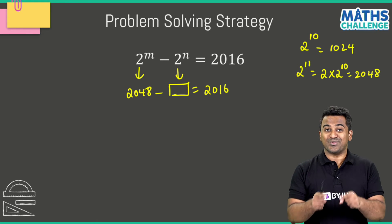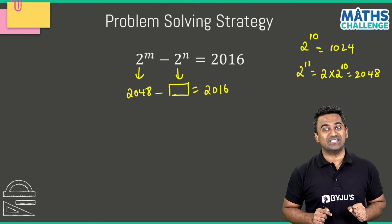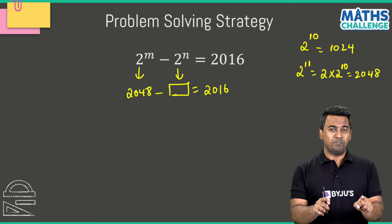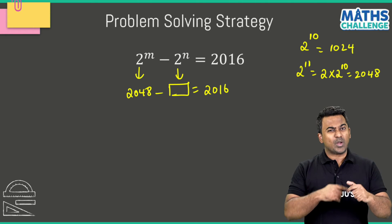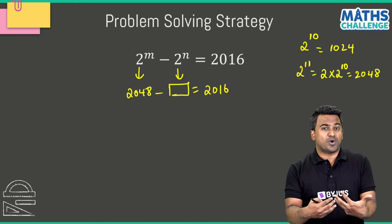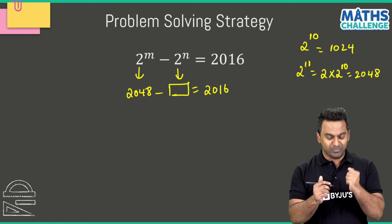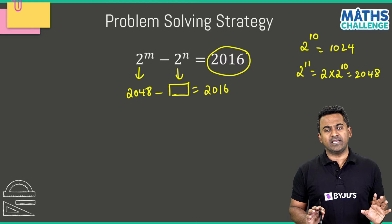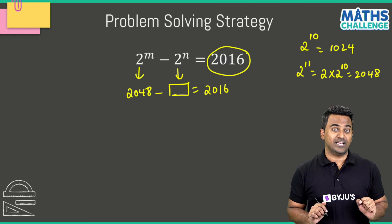But then what you are subtracting also has to be in the form of 2 power n. What if this is 30, what if this is above 28, right? That is also possible, right? So that's where the challenge lies. I'm sure you've understood what this is. So what we are going to do now is that we're going to convert this from a subtraction problem to a multiplication problem.